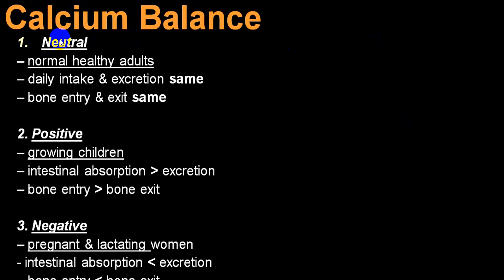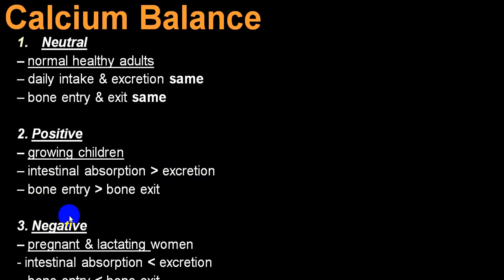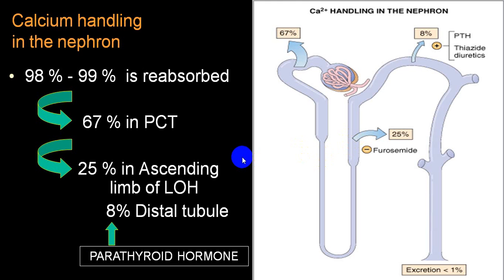Calcium balance types: Neutral balance — dietary intake equals excretion, bone entry equals exit. Positive balance — in growing children, intestinal absorption becomes more than excretion and bone entry becomes more than resorption, so there is more bone deposition. Negative balance — during pregnancy and lactation, intestinal absorption is less than excretion and bone entry becomes less than resorption.